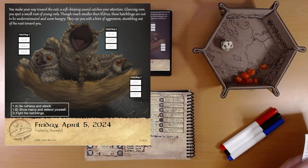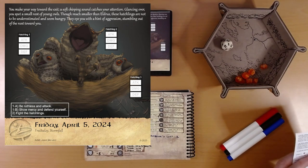Okay. There's three hatchlings here. We have a choice. We can be ruthless and attack. Or we can show mercy and defend yourself. Either way, we fight the hatchlings.